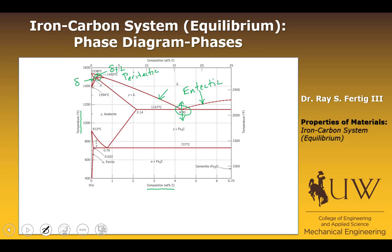Then we have a solid phase gamma as we come through this region. The gamma phase changes into alpha plus Fe3C — remember, that's going to be an intermetallic. That reaction right there is a eutectoid reaction.